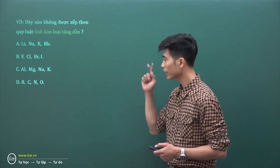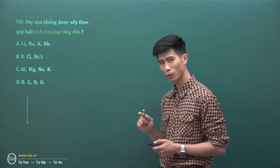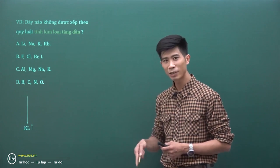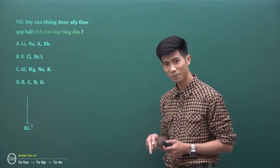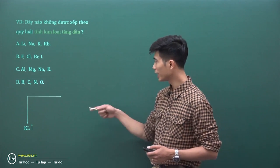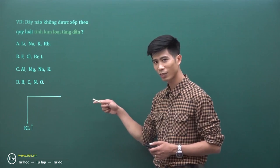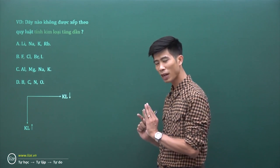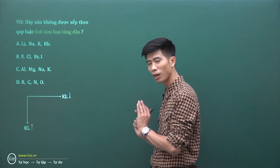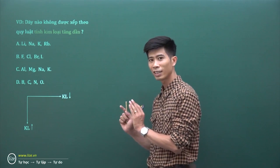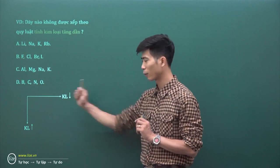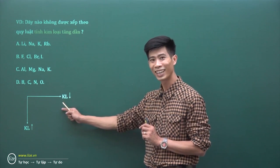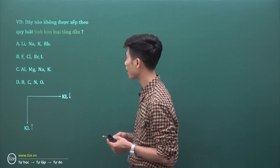Để tính kim loại tăng dần, phải cùng một nhóm, đi từ trên xuống dưới tính kim loại tăng dần, sắp xếp theo chiều tăng dần của điện tích hạt nhân. Còn trong một chu kỳ, các nguyên tố sắp xếp theo chiều tăng dần của điện tích hạt nhân thì tính kim loại giảm. Nếu sắp xếp ngược lại, từ phải qua trái trong cùng một chu kỳ, thì tính kim loại sẽ tăng.